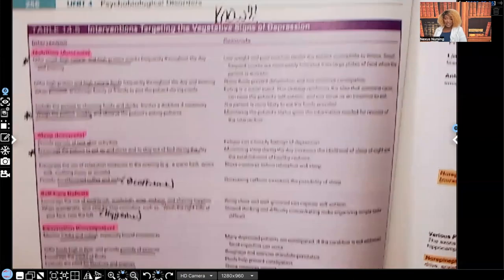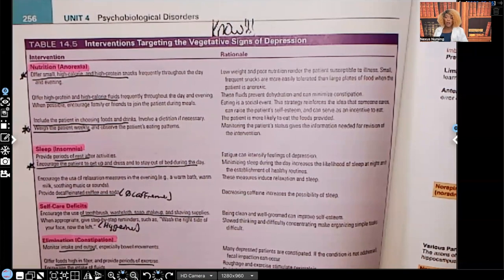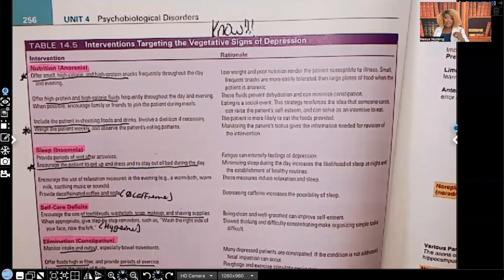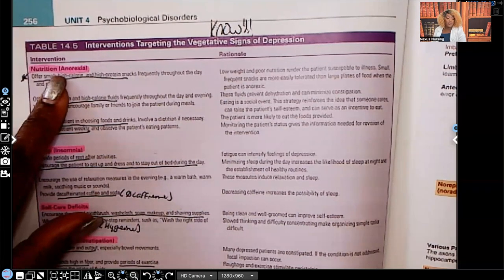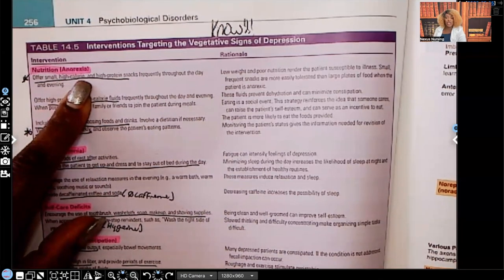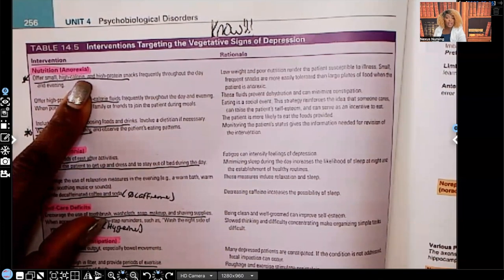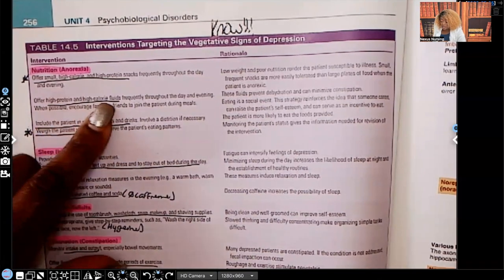Table 14-5 — know this! Nursing interventions for patients in vegetative states, meaning they're not moving, not getting up to brush their teeth, nothing. For nutrition: they'll have anorexia with no appetite. Offer small, high-calorie, high-protein snacks because the little food they do take in needs to be high in nutrition. Protein is important for cell regeneration and wound healing. Offer high-protein and high-calorie fluids as well.